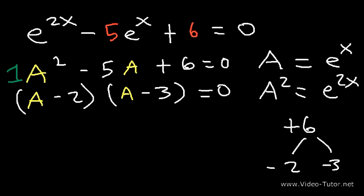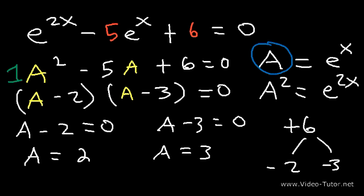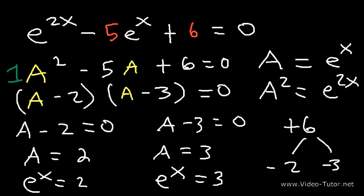We can set each factor equal to 0: a minus 2 equals 0 and a minus 3 equals 0. Therefore, a is equal to 2 and a is equal to 3. Now we want to replace a with what it equals — e to the x. So if a is equal to 2, then e to the x is also 2, and if a is equal to 3, then e to the x is equal to 3.